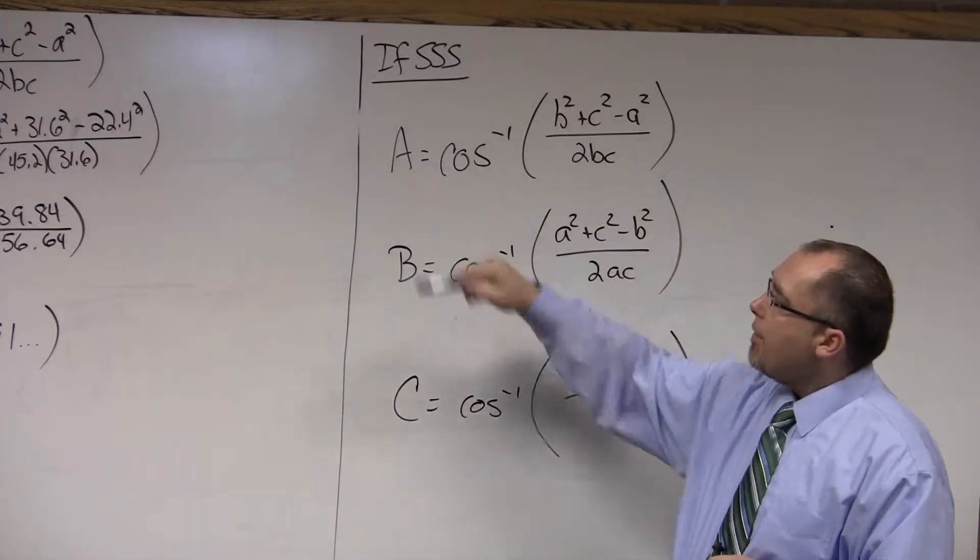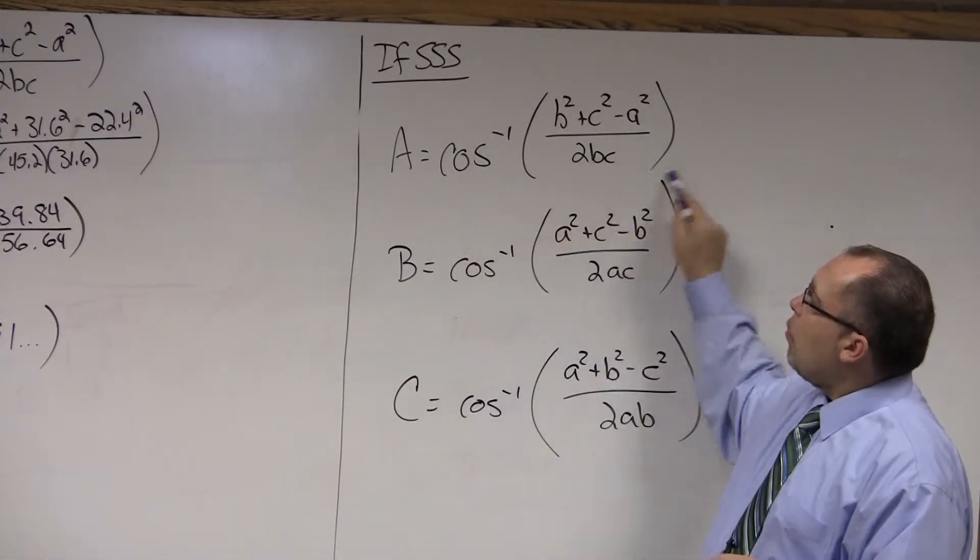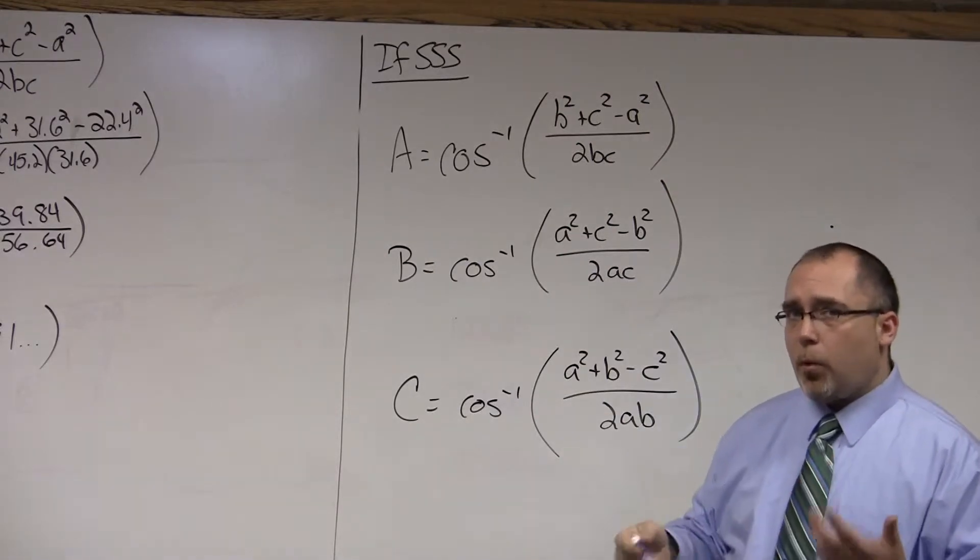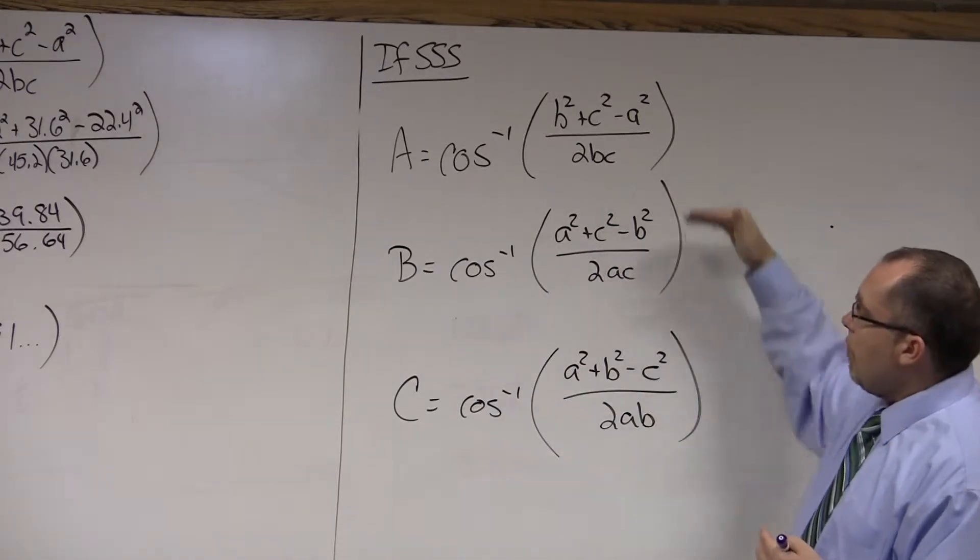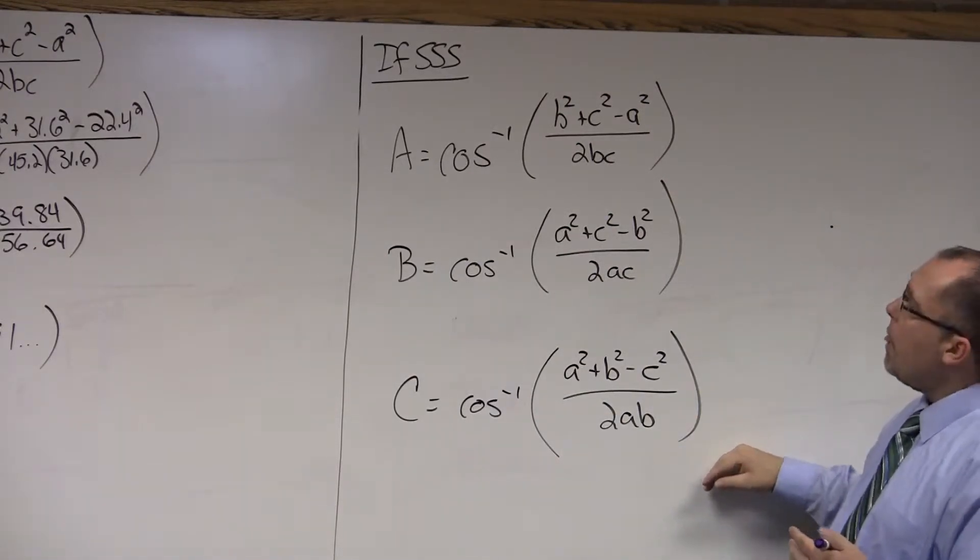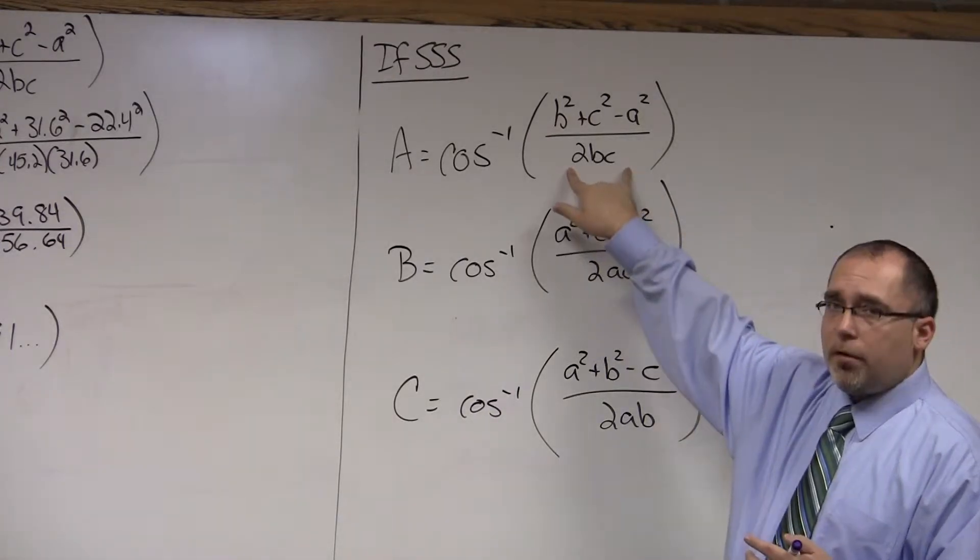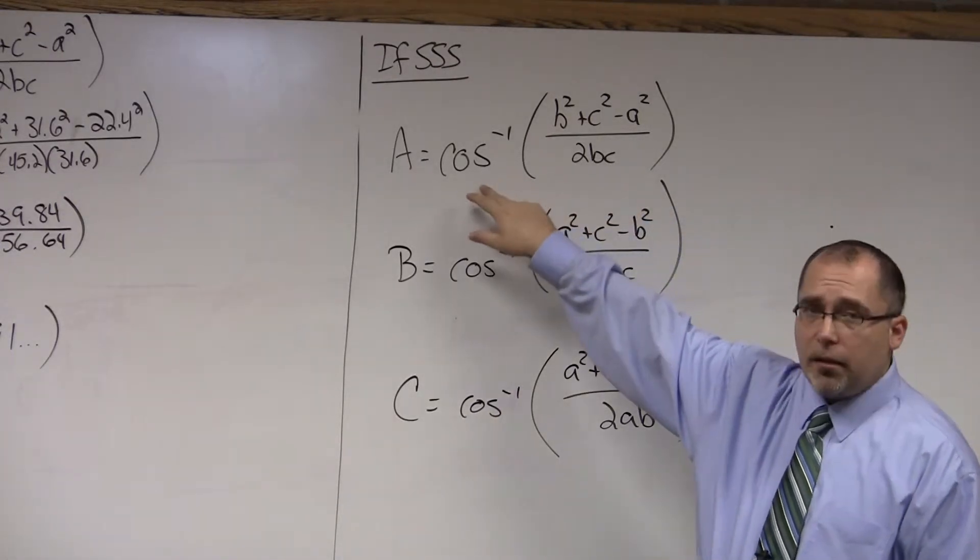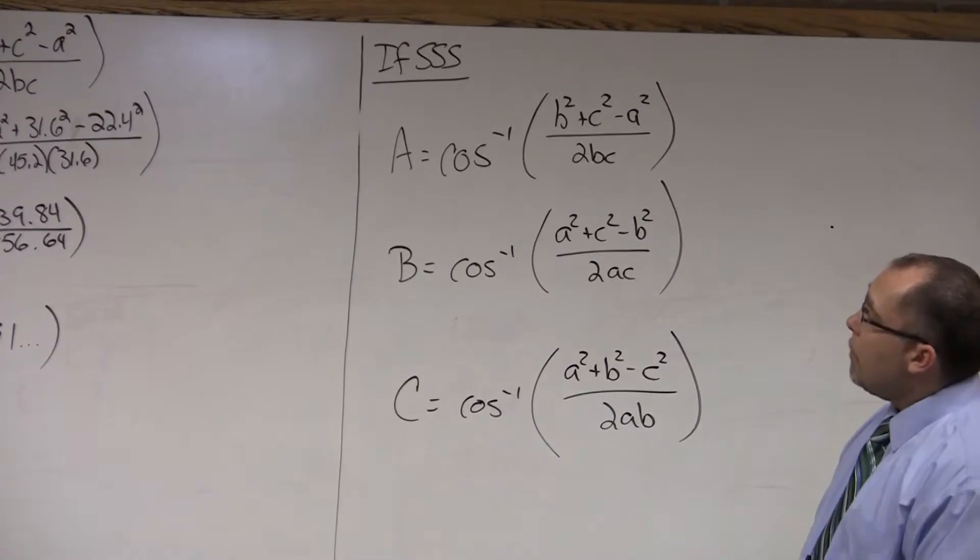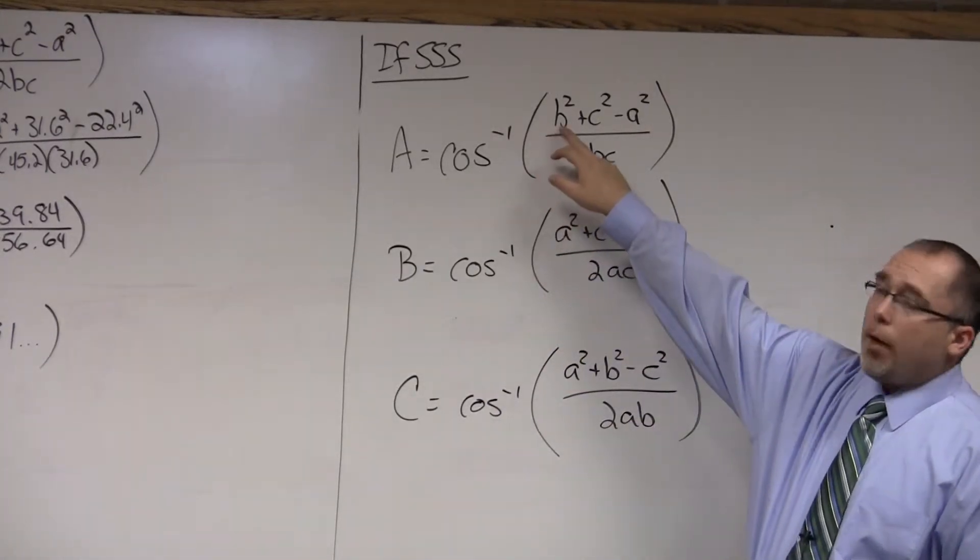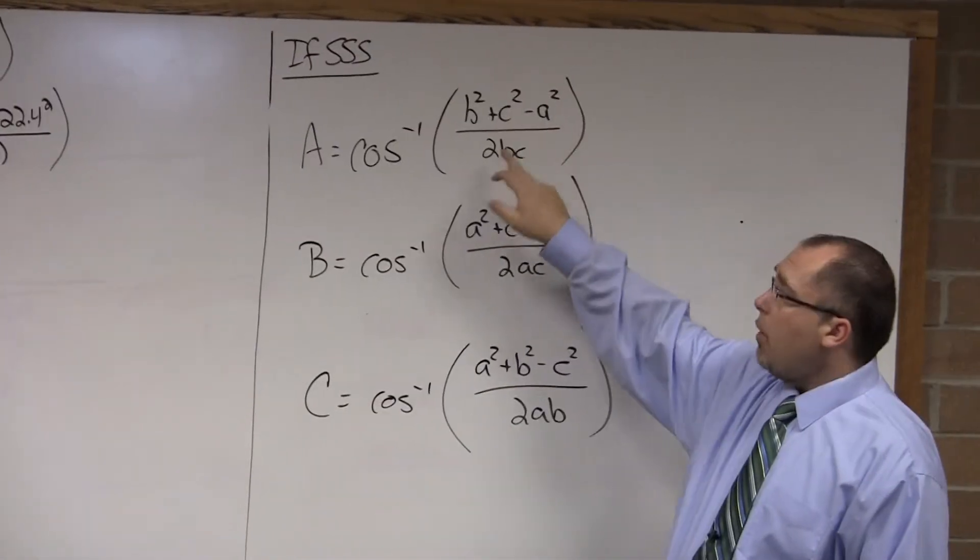Now, if you're looking for angle A, you're going to inverse cosine what we have here in parentheses. And as we work through these, and I gave you all three variations, I want you to do what's inside here first. The last thing you're going to worry about is taking the inverse cosine of it. So, if you're looking for angle A, our numerator is b squared plus c squared minus a squared over 2bc.